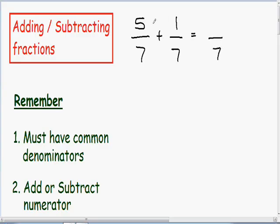And then in the numerator, we just add the two numbers. So since we have a 5 and a 1, we just add the two numbers together. So in our numerator, we have 5 plus 1, which is equal to 6. And our denominator, we have a 7. So 5 over 7 plus 1 over 7 is equal to 6 over 7.